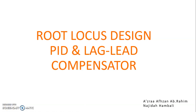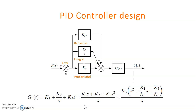This is a lecture for root locus design of a PID compensator — proportional, integral, and derivative. PID control design consists of three gains: proportional K1, integral K2, and derivative K3, where the compensator transfer function is based on these three gains.